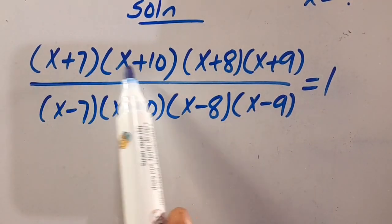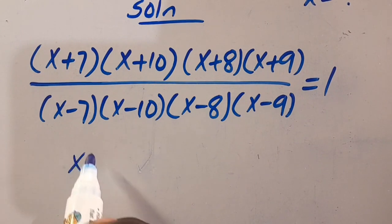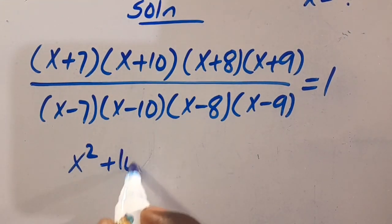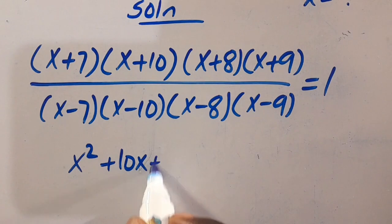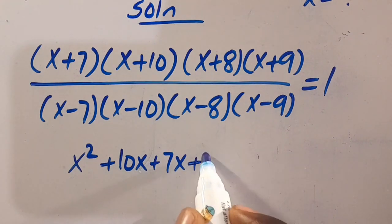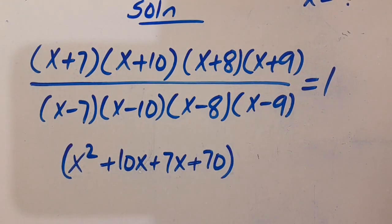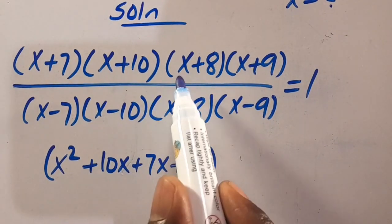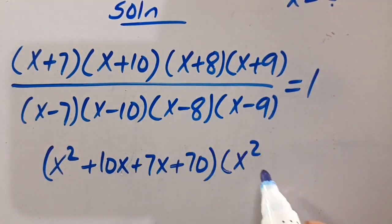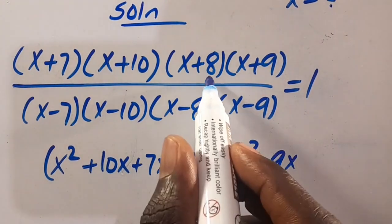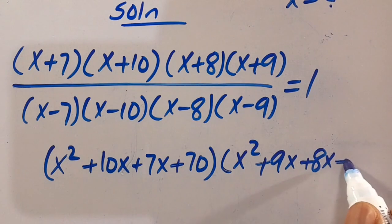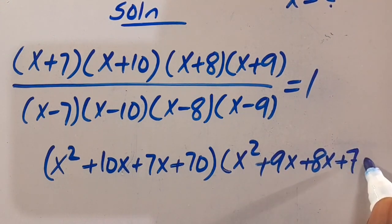So let's open this bracket. We are going to have x times x equals x squared, x times 10 gives 10x, 7 times x gives 7x, 7 times 10 gives 70. Then this times this gives x squared, x times 9 gives 9x, 8 times x gives 8x, and 8 times 9 gives 72.